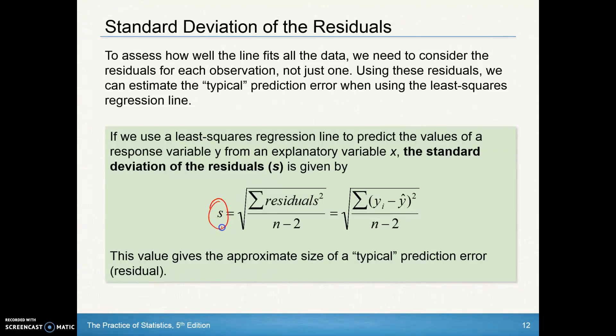This s value, when we look at data outputs, is the standard deviation of the residuals. It tells us the approximate size of a typical prediction error, or the typical distance of a prediction error.